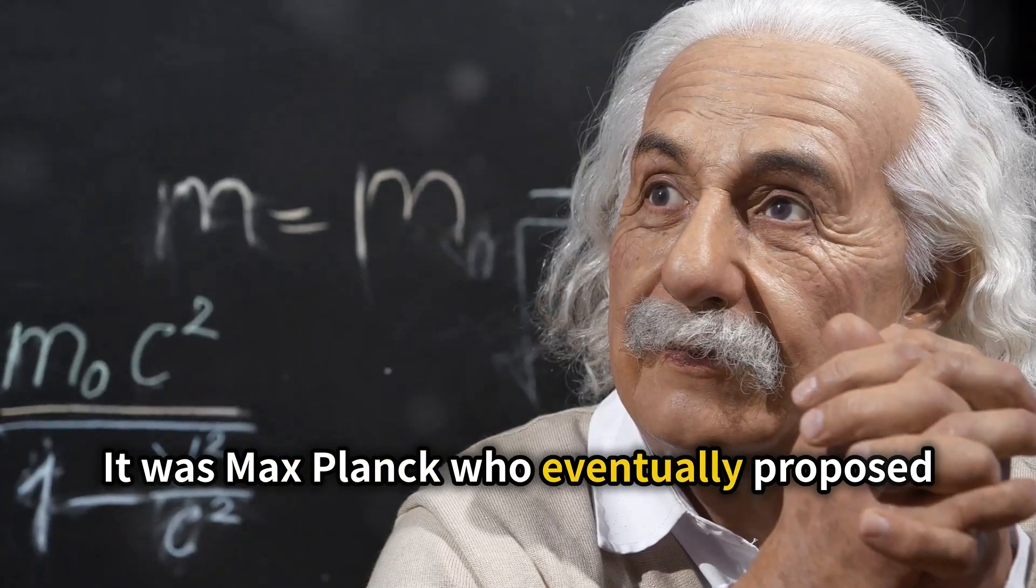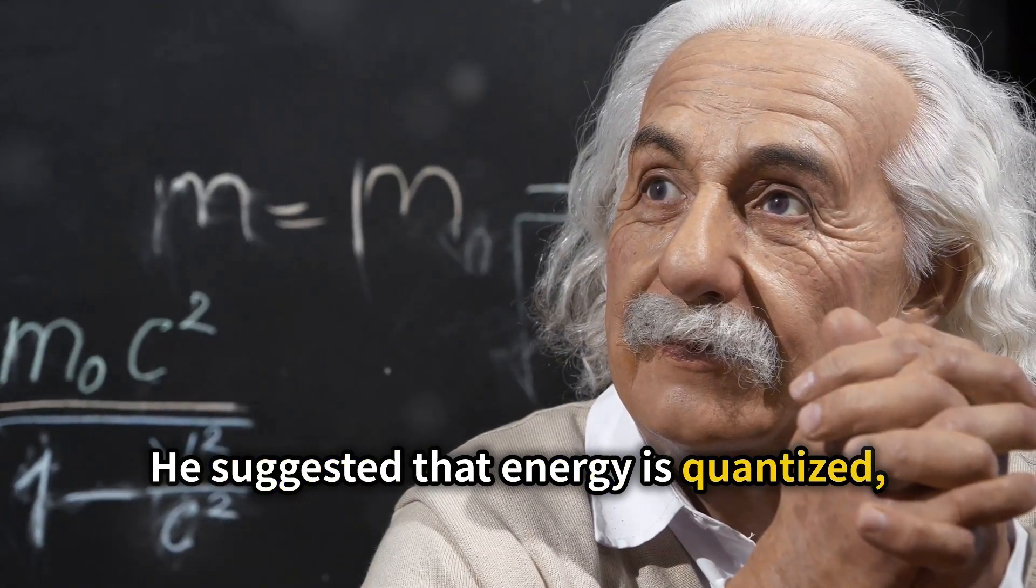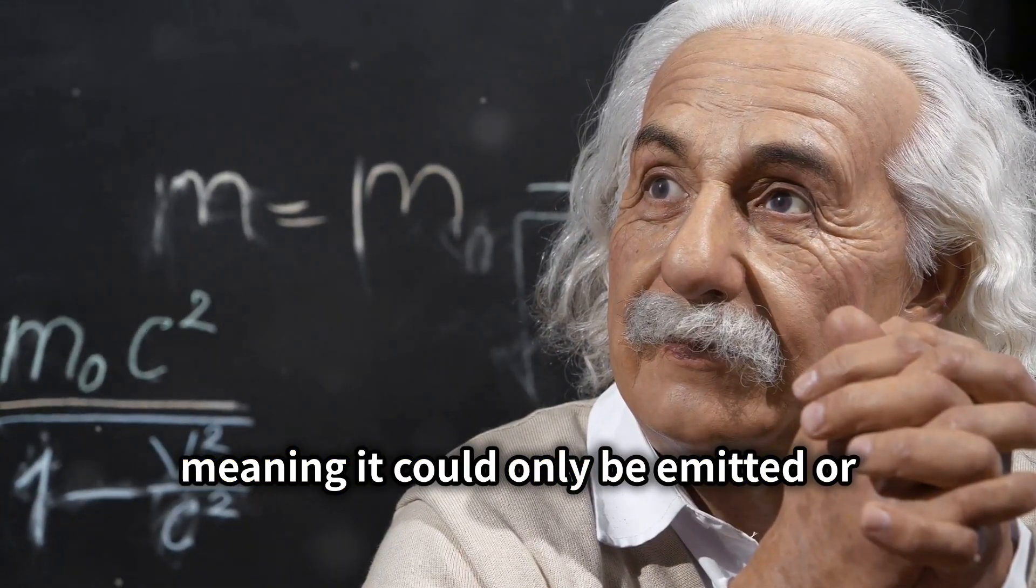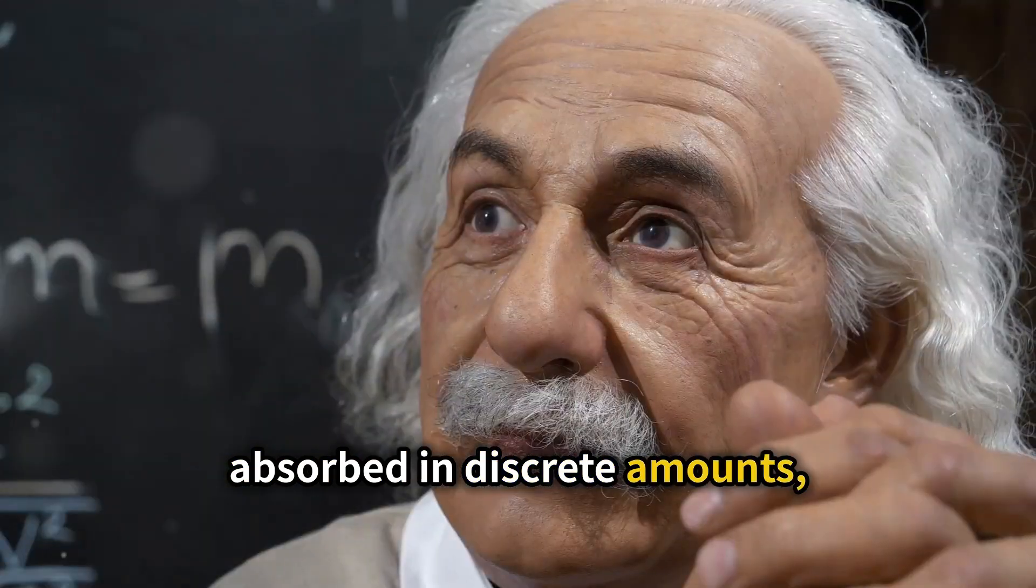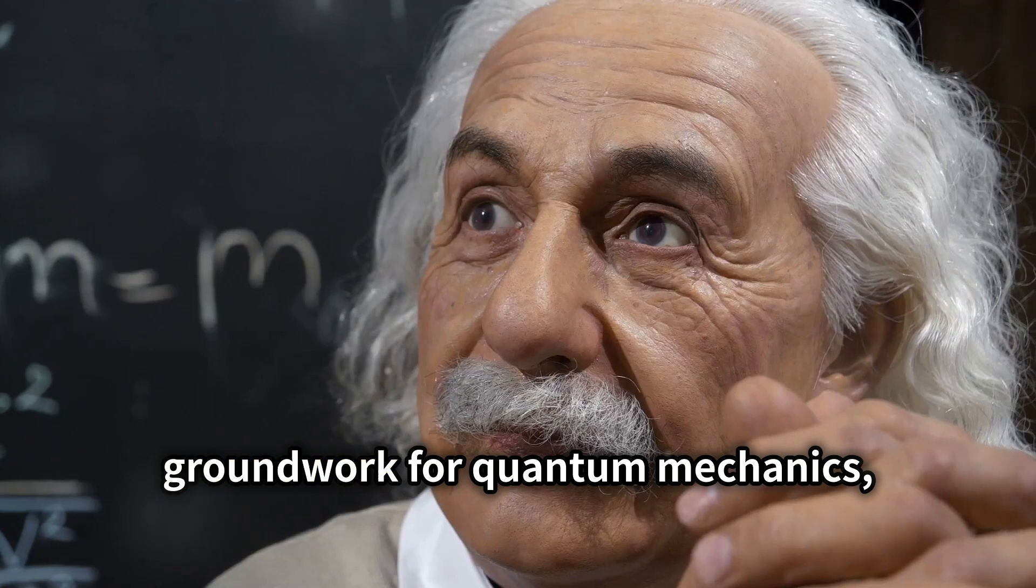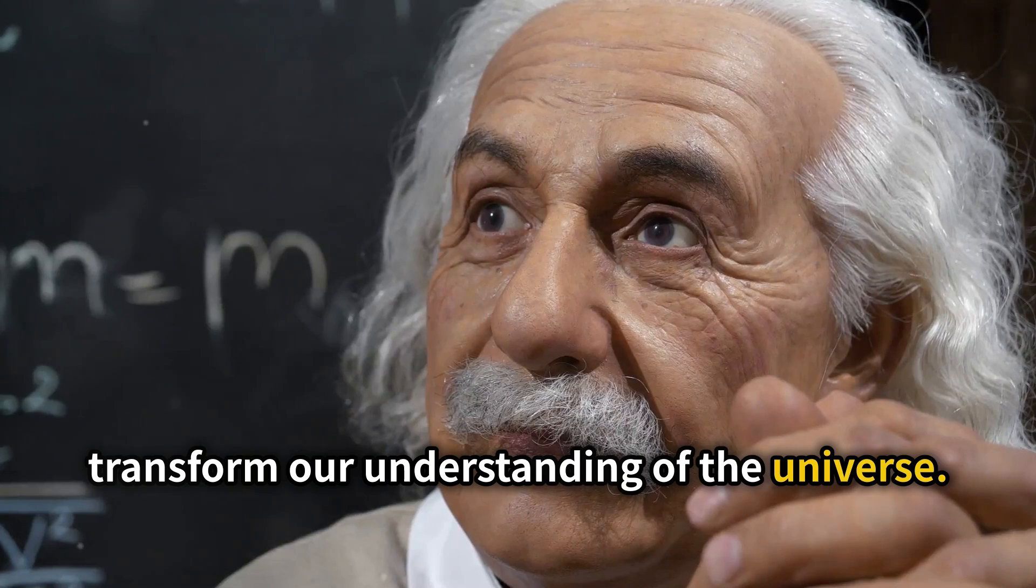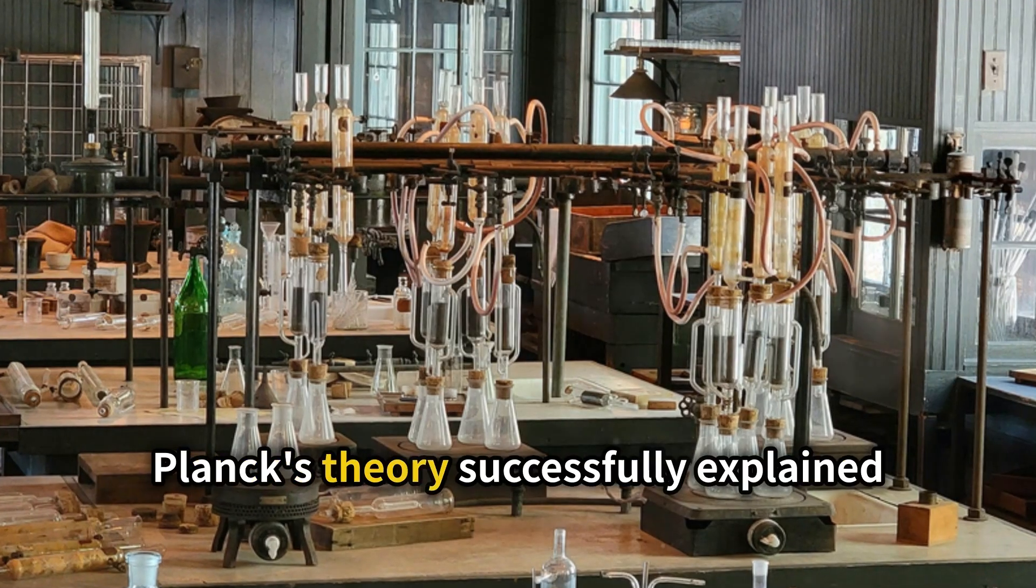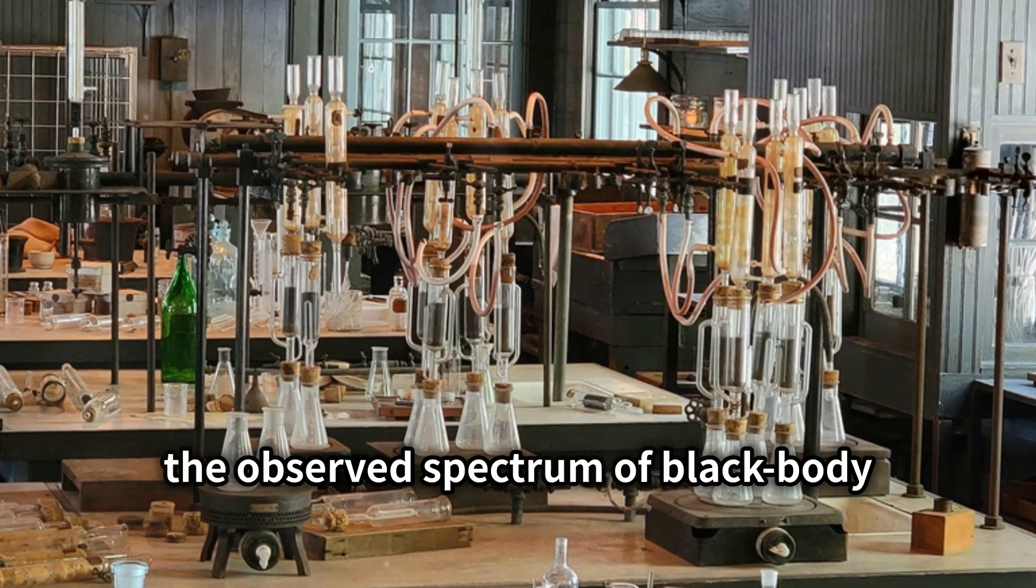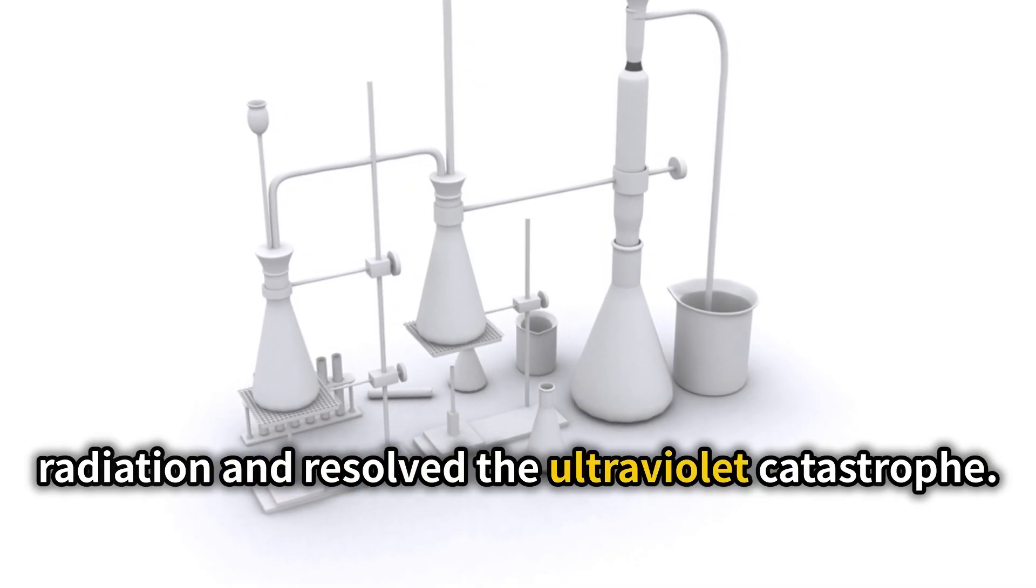It was Max Planck who eventually proposed the solution. He suggested that energy is quantised, meaning it could only be emitted or absorbed in discrete amounts or quanta. This revolutionary idea laid the groundwork for quantum mechanics, a new branch of physics that would transform our understanding of the universe. Planck's theory successfully explained the observed spectrum of black body radiation and resolved the ultraviolet catastrophe.